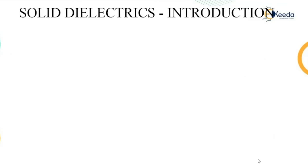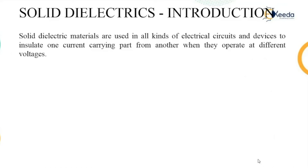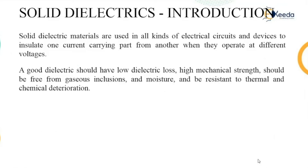After liquids, let us understand solid dielectrics. Solid dielectric materials are used in all kinds of electrical circuits and devices for the purpose of insulating one part of the device from another, to prevent short circuits. A good dielectric has certain properties: low dielectric loss, high strength, and it must be free from gases, moisture, and thermal and chemical contaminants — because these reduce the properties and lead to thermal and chemical deterioration.